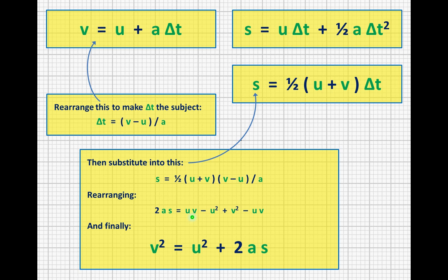If we then multiply out this bracket, we end up with this quadratic expression here. The u v here and the minus u v here cancel out. And if we take the minus u squared onto the other side, we end up with this expression here. v squared equals u squared plus 2as. And this is our fourth and final equation of motion.